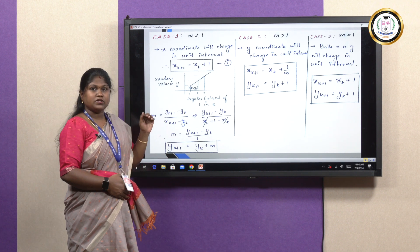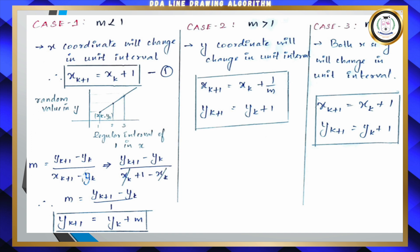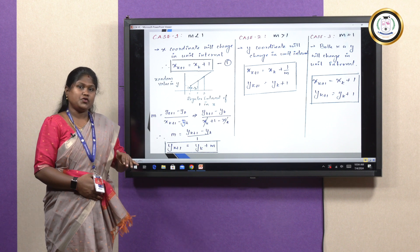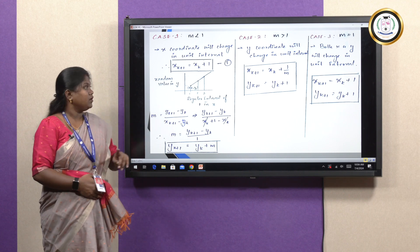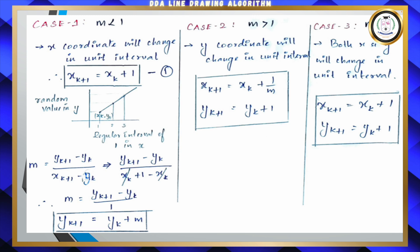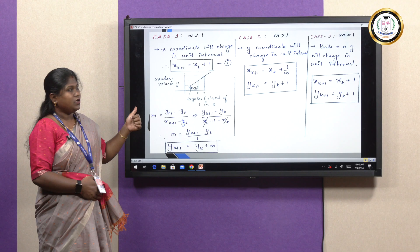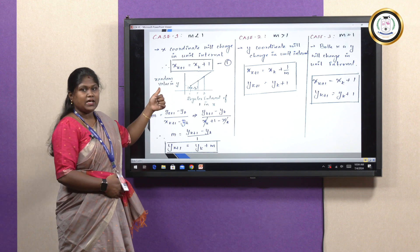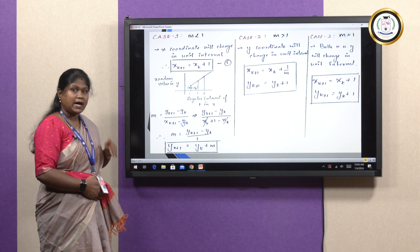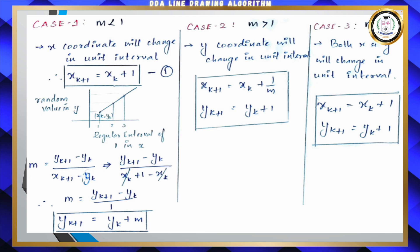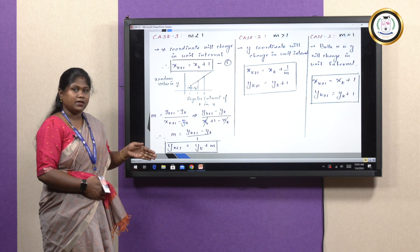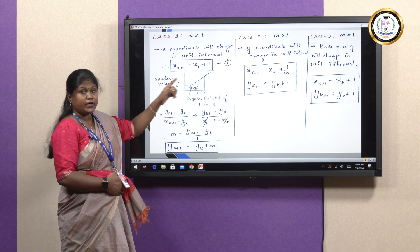When the slope value M is less than 1, the X value of all coordinates will change in unit intervals. For example, if the X value of the first coordinate is 1, the X value of the next coordinate will be 2. All X values move in regular intervals of 1 — so if X is 1, the next X value will be 2, then 3, and so on — while we will get random values for Y. So XK+1 = XK + 1.